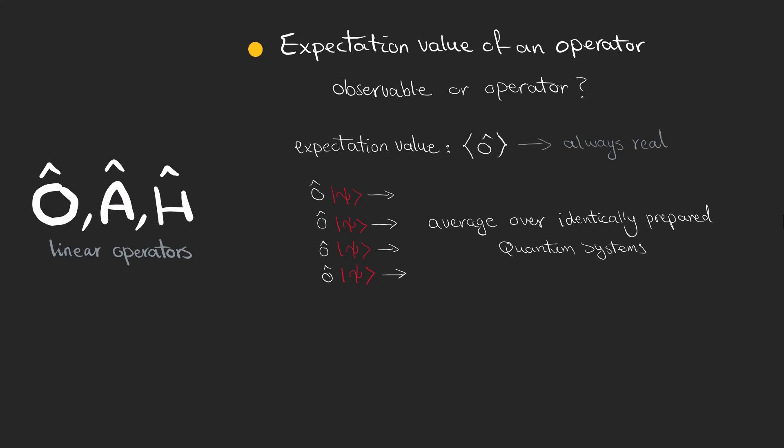The expectation value of an observable is always real and is associated with the average result of the observable performed on identically prepared quantum systems in the state psi, so it doesn't necessarily correspond to any single measurement result but rather on the statistical average over many trials. In fact, it is a measure of the average outcome of measuring the observable on a quantum system by a state psi, so I suggest you to watch this video to know more about Hilbert space which is really important in quantum mechanics.